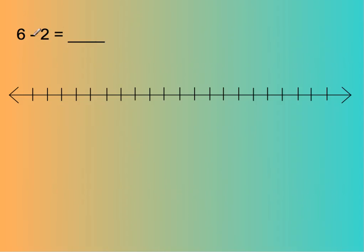Again, we have 6 minus 2. These are just directions: it means start at 6. Then the sign tells you subtraction means to count in the opposite direction — go to the left — 2 spaces. So we count to the left 2: 1, 2. And that's why 6 minus 2 is 4, because I landed on 4 on the number line.